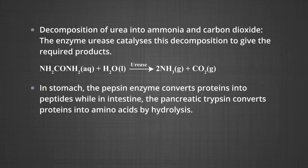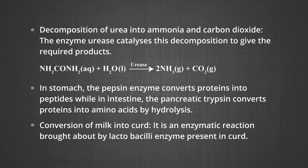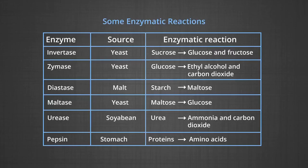Number six, in the stomach, the pepsin enzyme converts proteins into peptides. While in the intestine, the pancreatic trypsin converts proteins into amino acids by hydrolysis. Number seven, conversion of milk into curd — it is an enzymatic reaction brought about by the lactobacillin enzyme present in curd. These details along with the sources are tabulated for your ready reference.